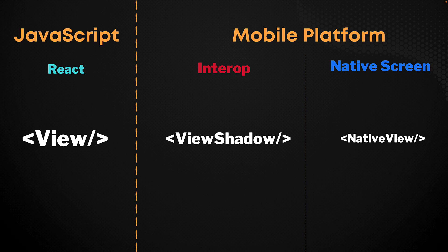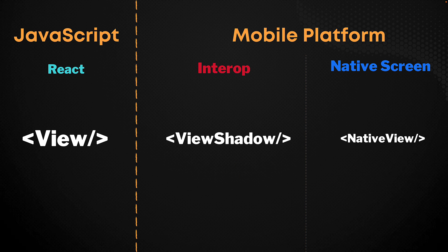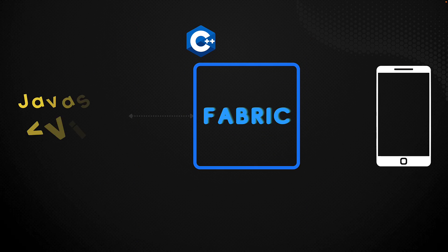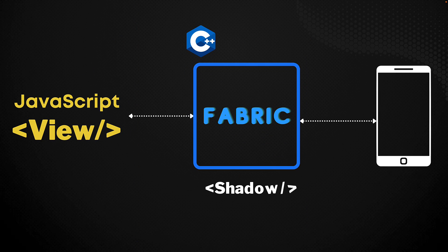One key responsibility of this interop layer is to create shadow versions that will maintain the link between what we wanted in the view and what got rendered to the native device. A key part of this interop is the React Native renderer called Fabric, which is now written in C++ and will be maintaining the shadow versions of our components.